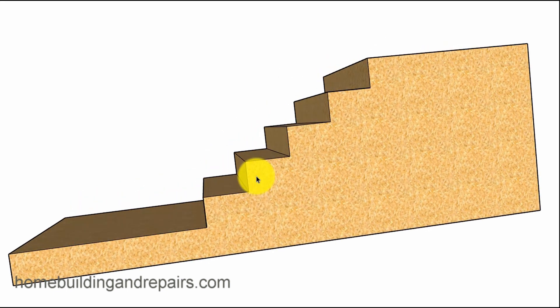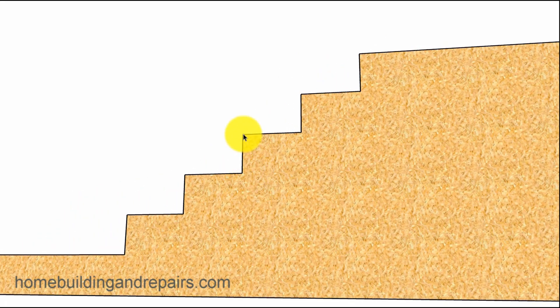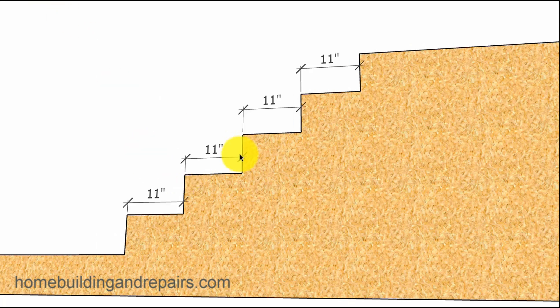The building codes require you to measure from the face of the farthest protruding section above. So if I had a nosing here it would be from the face of the nosing, but here it's going to be from right here to the farthest projecting face of the step on the lower section.